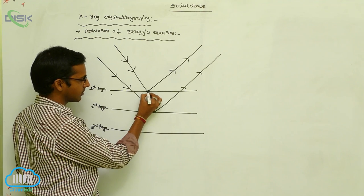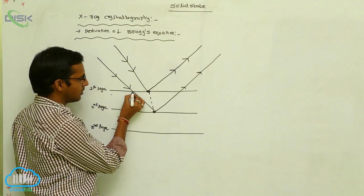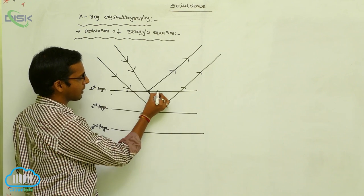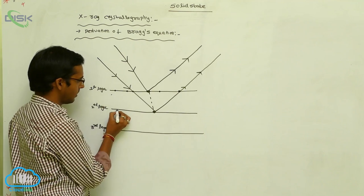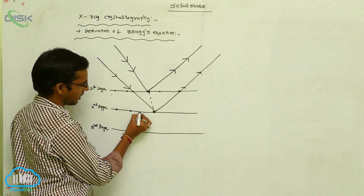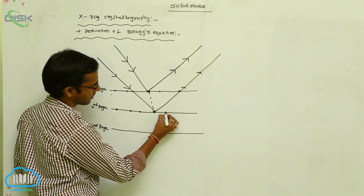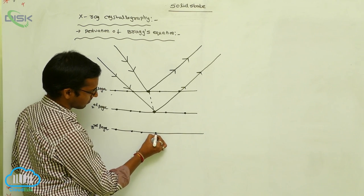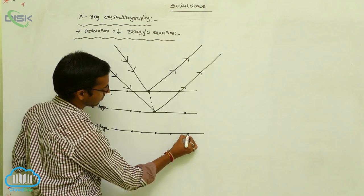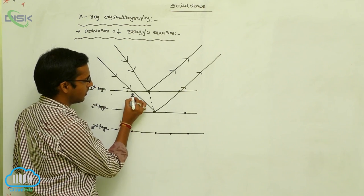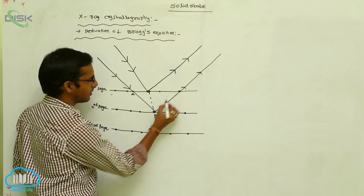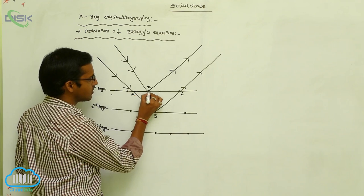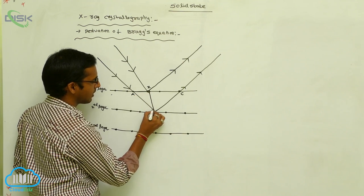So in that reflected light, these consist of some crystalline points arranged in this manner. The distance here is A, this is B, this is C, and the located point is Z. This arrangement is in a trigonometric manner.